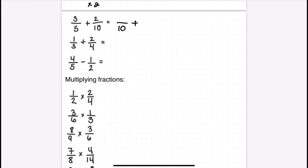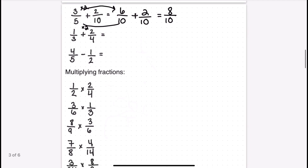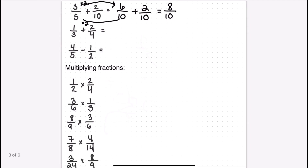Try these practice problems. For three fifths plus two tenths, I need to change three fifths into something with a 10 in the denominator, so I multiply the top and bottom by two. That gives me six plus two on top, which is eight, with 10 in the denominator. You could reduce that further by taking out a two from each, leaving you with four fifths.